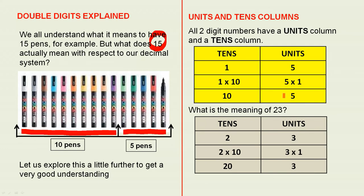5 1s are 5. 1 times 10 is 10. So all together, look what we've got. 10 plus 5 gives you 15. And that's how we get 15 from the digits 1 and 5. That's how we break it up. That is the meaning of the 1 and the 5, and it's very important to understand that.